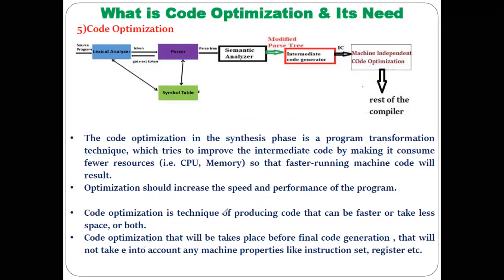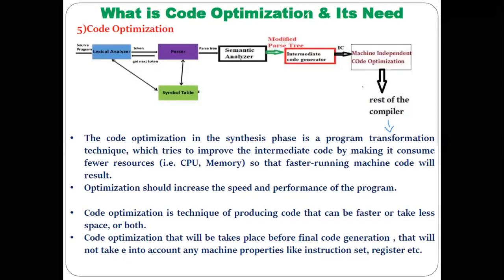Code optimization that takes place before the final code generation does not consider any machine properties like instruction set or registers — that is why it is called machine independent code optimization. Code optimization that happens after code generation is called machine dependent code optimization, because it must consider machine properties like instruction set and registers.